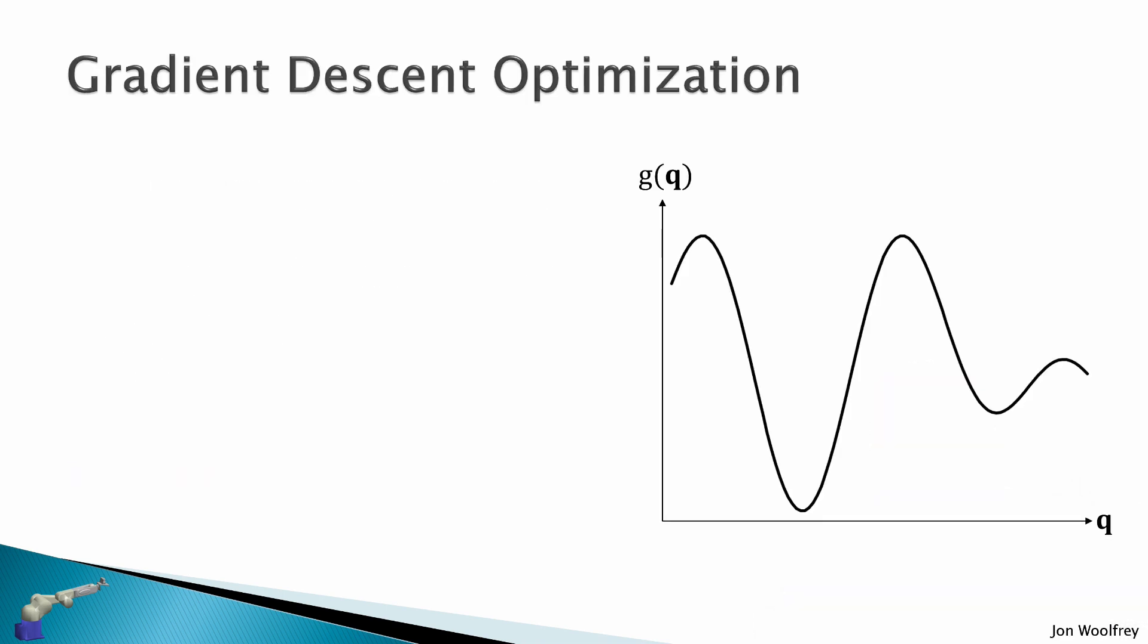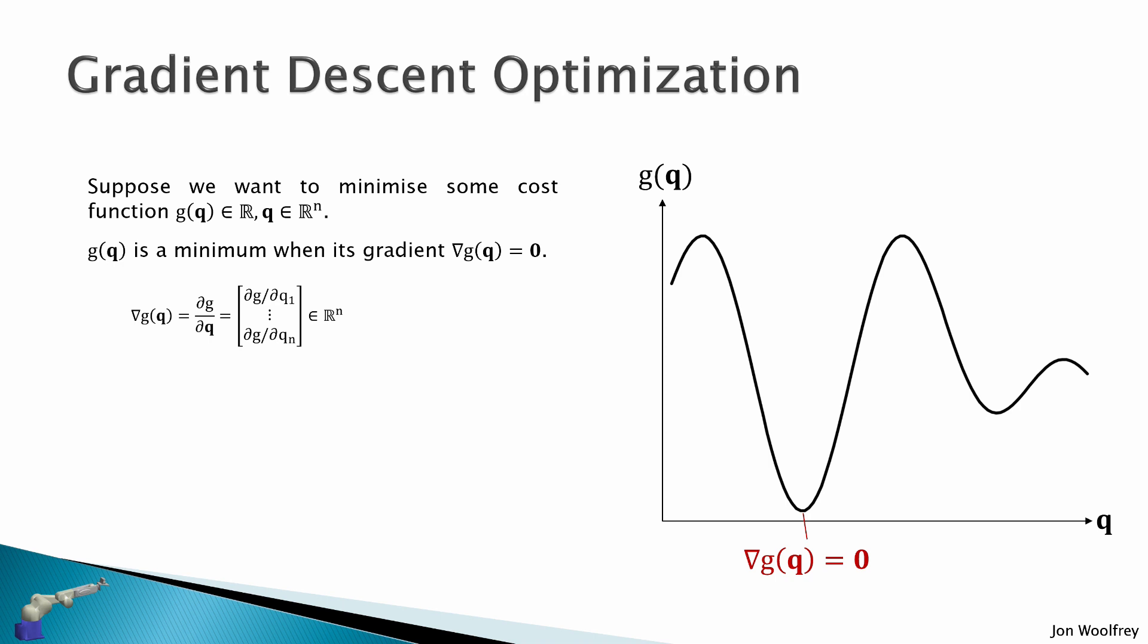To solve inverse kinematics with optimization we need gradient descent. Basically we want to minimize some cost function g(q) which is a scalar, and we have q which is a vector of real values in n dimensions. We know that this cost function g is a minimum where its gradient is zero, and the gradient is given by the partial derivatives of g with respect to each joint angle q, and this gradient will be a vector in the set of real values in n dimensions.